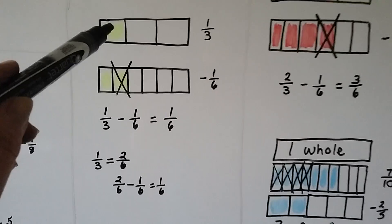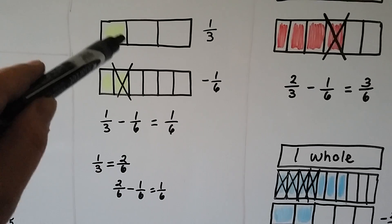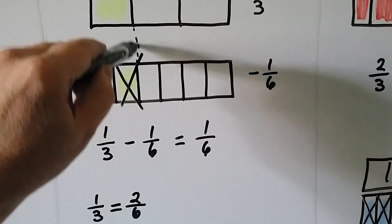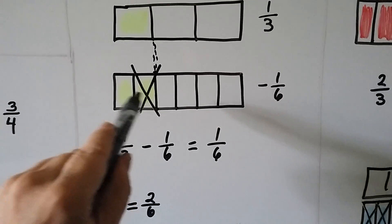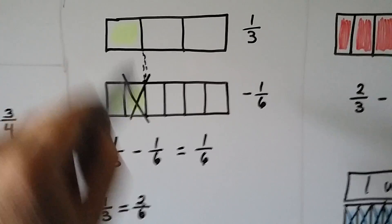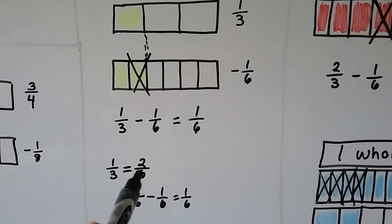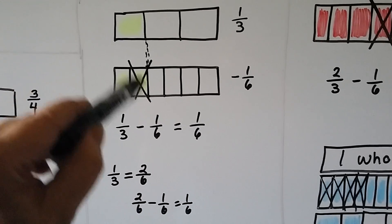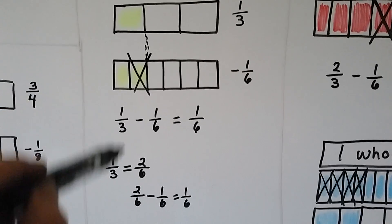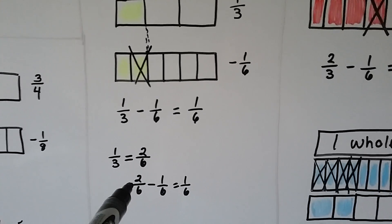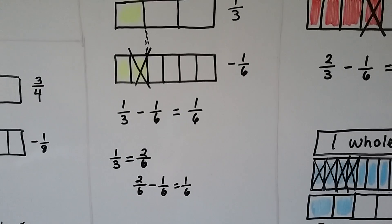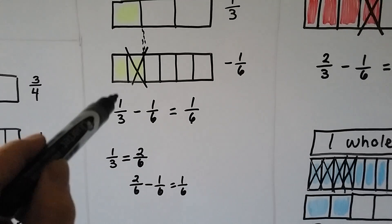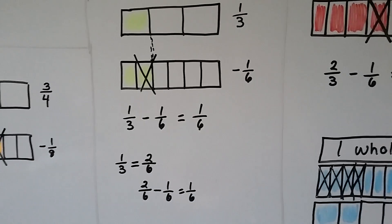This is one-third. It's the same thing as two-sixths — see how it lines up here? Two of these little one-sixths is the same thing as one-third. And if we wanted to take one-sixth away, we take that one away and we're left with one-sixth. So it's almost like we did two-sixths minus one-sixth equals one-sixth. One-third minus one-sixth is one-sixth because one-third equals two-sixths.